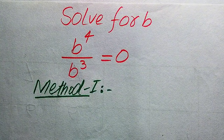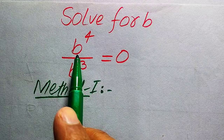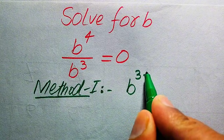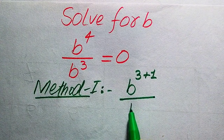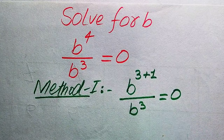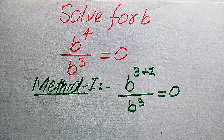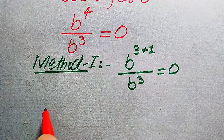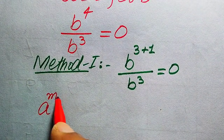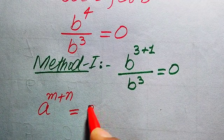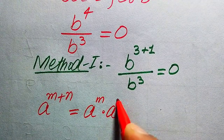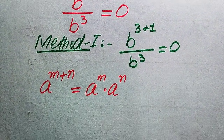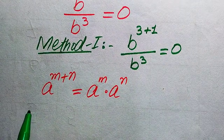In the first method, we focus on the numerator term, which is b to the power of 4. We rewrite b to the power of 4 as b to the power of 3 plus 1, divided by b cubed, and this whole equation equals 0. Now we use the exponential law: a to the power of m plus n equals a to the power of m multiplied by a to the power of n.